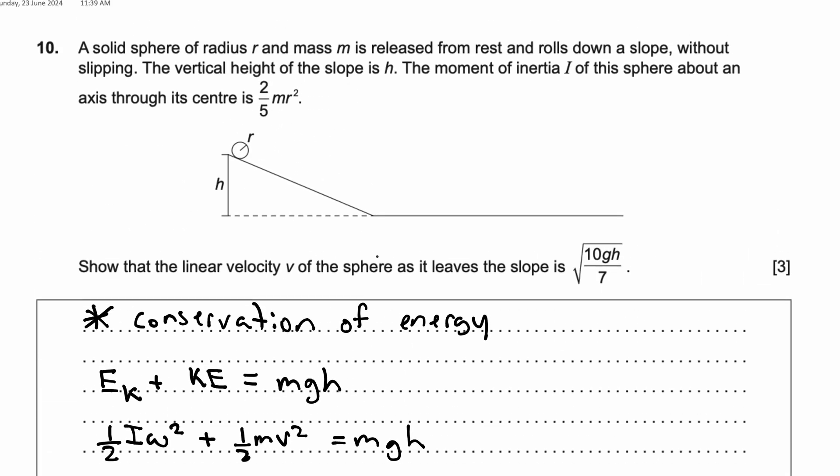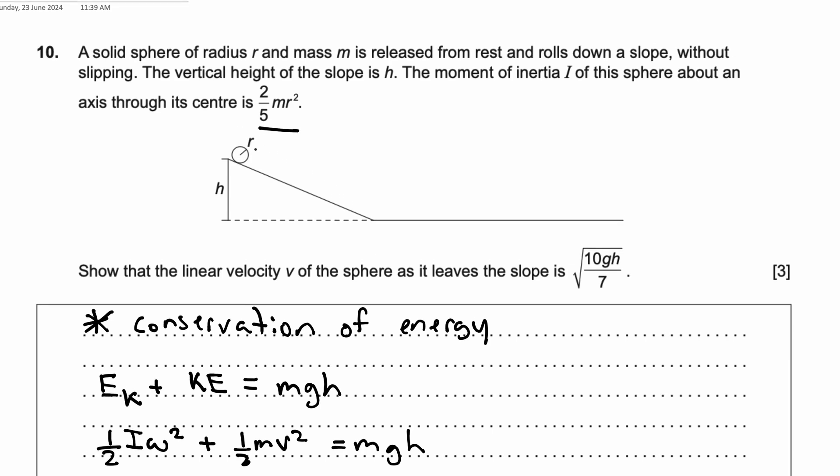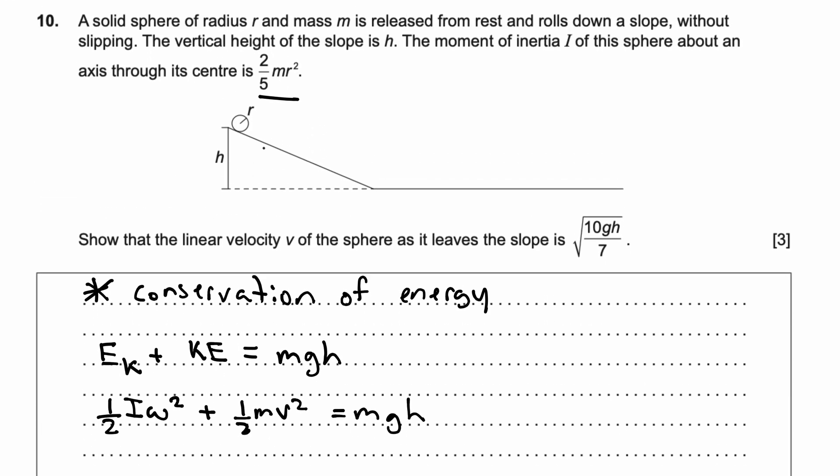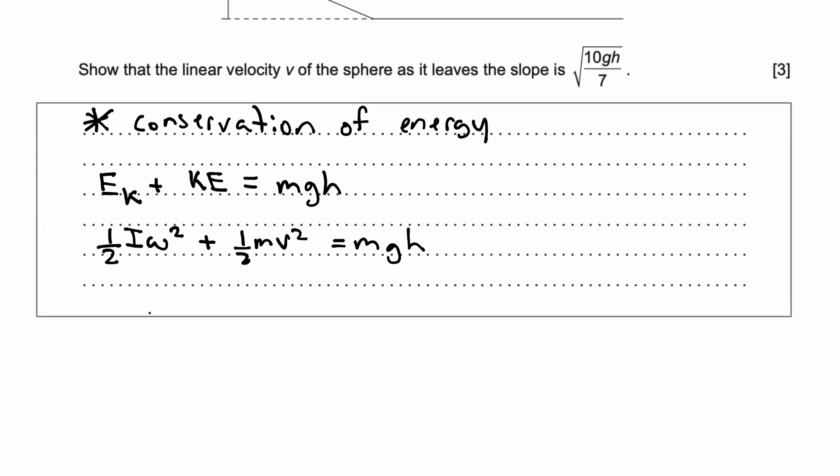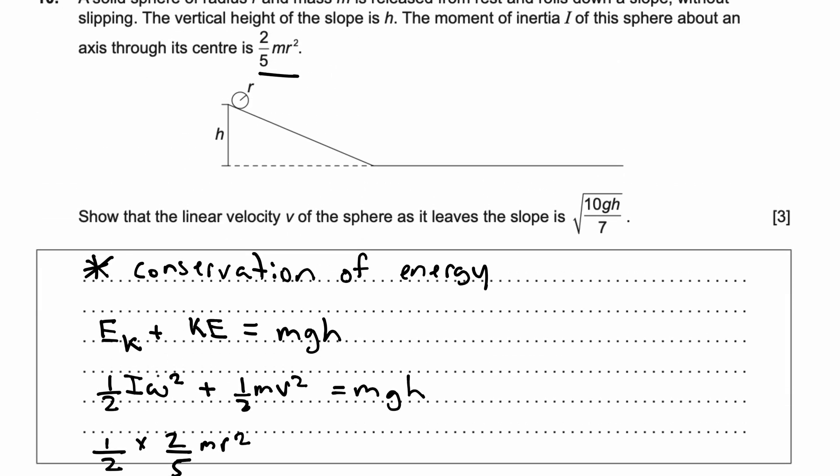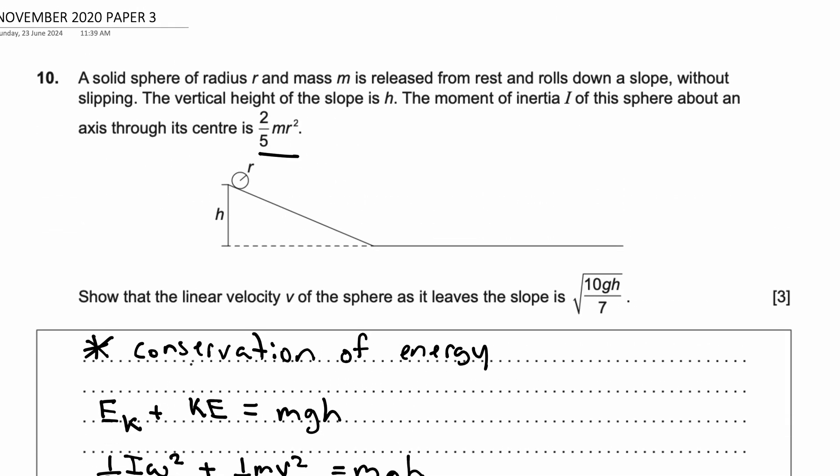Now we know that the moment of inertia for this sphere is 2/5 mr². So let's substitute that into this equation. We get ½, instead of I, I can put 2/5 mr², and we don't have any expression for ω, right? We don't have any value.